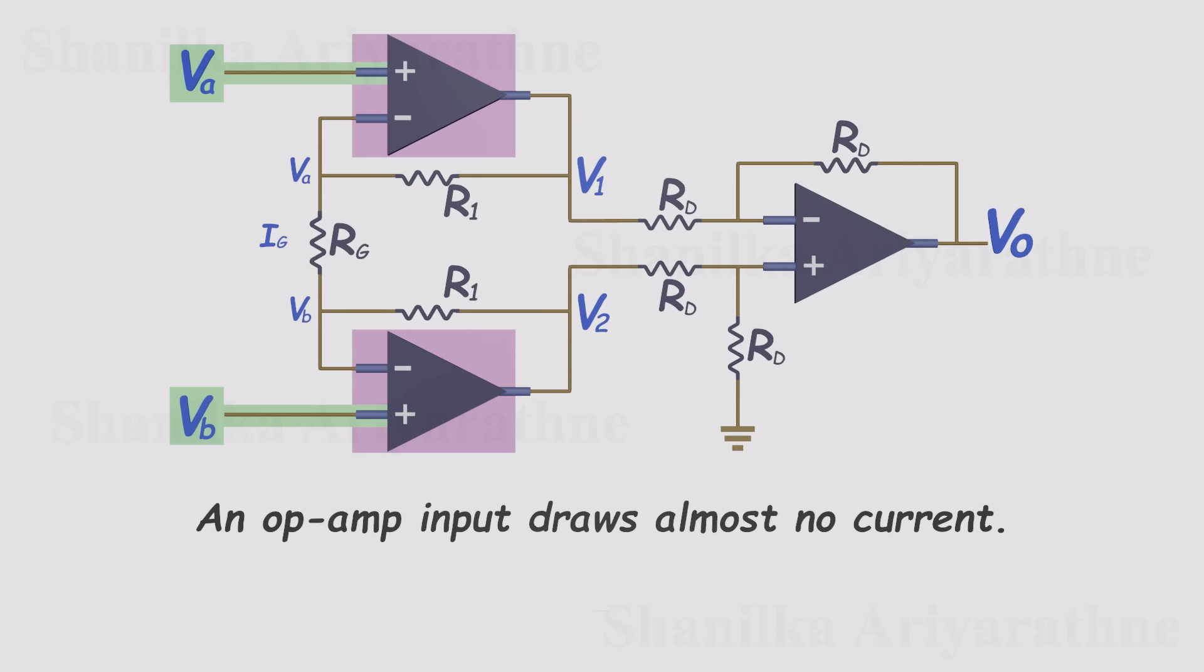In technical terms, these op amps are acting as buffers, and buffers provide very high input impedance. That means the instrumentation amplifier doesn't load the signal source at all.